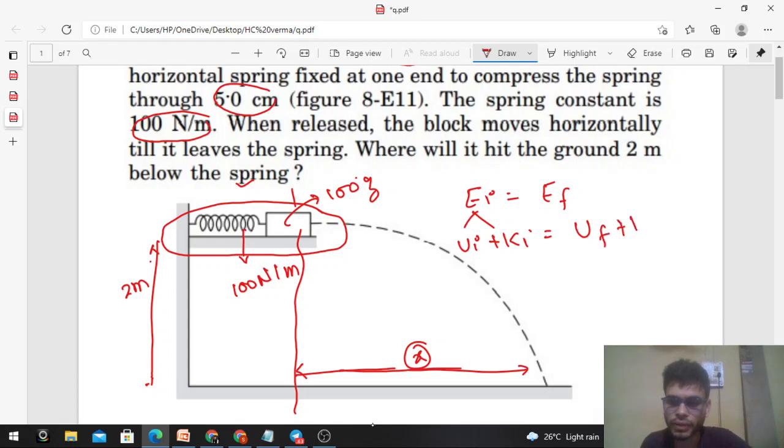And mechanical energy includes potential energy plus kinetic energy. Initial equals final: U_initial plus K_initial equals U_final plus K_final. Initially the spring was compressed by 5 centimeters, so half of k, which is 100, into the compression 0.05 squared, plus initial kinetic was 0 because initially the block was at rest. This equals final potential, which will be 0 because the spring will be in its natural length, plus final kinetic which is half of mass 0.1 into v squared.